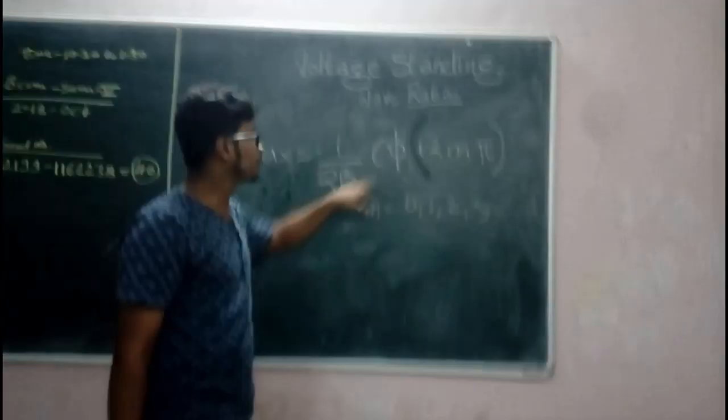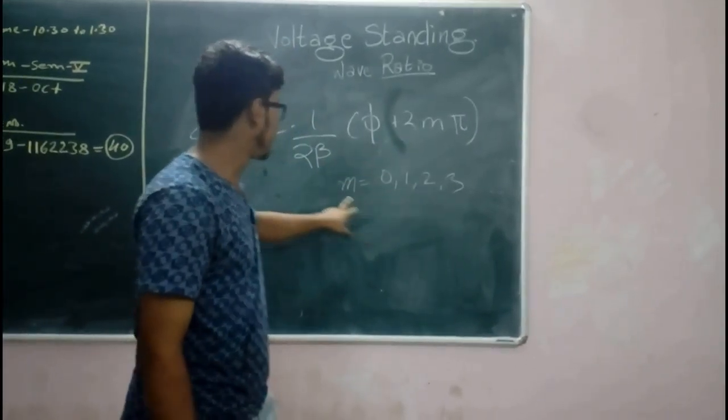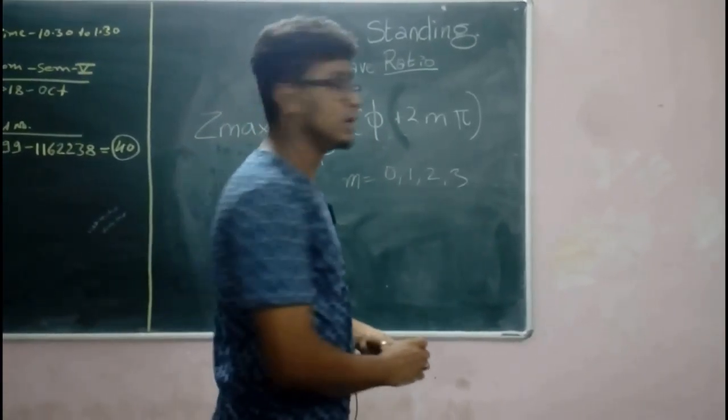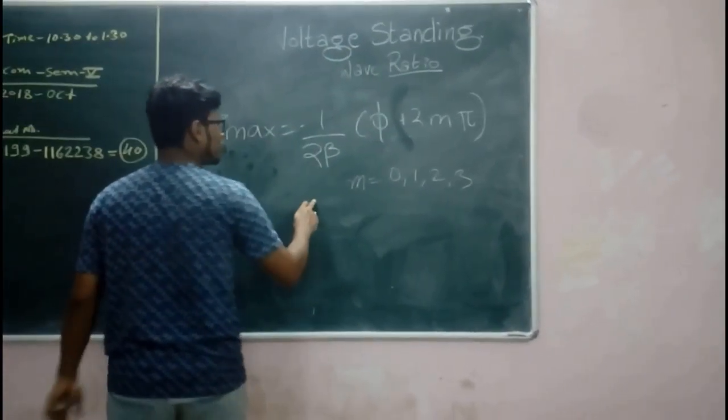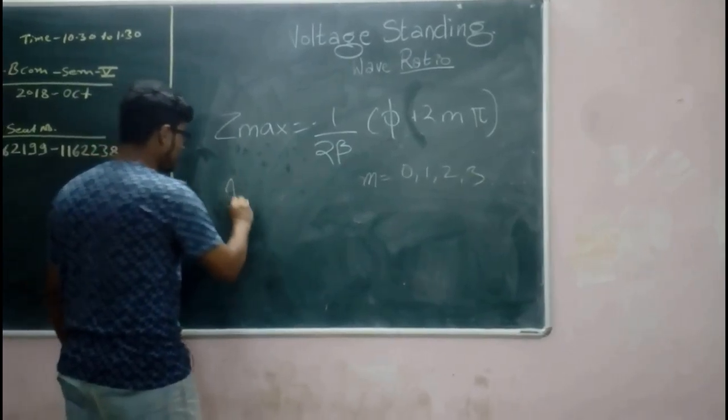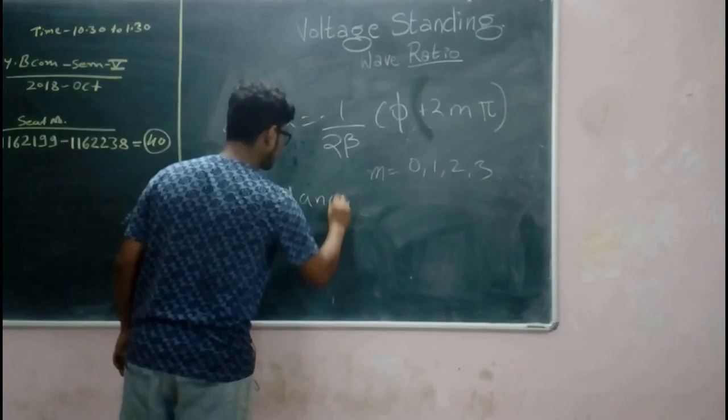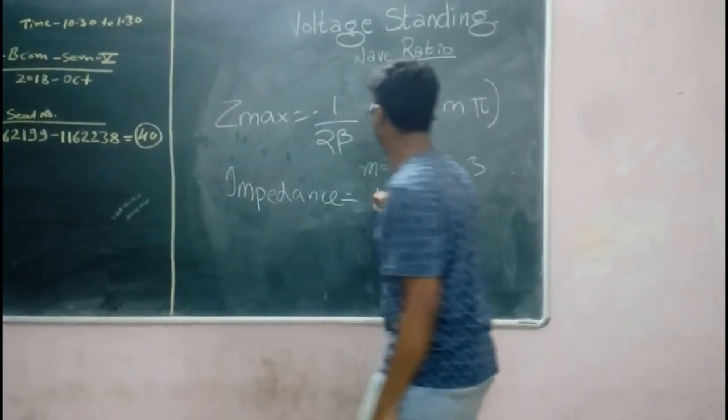So the formula goes like, minus 1/2 beta, π/2 plus 2mπ, where m is anything between 0, 1, 2, 3 and so on. So this is the formula from which you can find the length at which impedance is minimum.